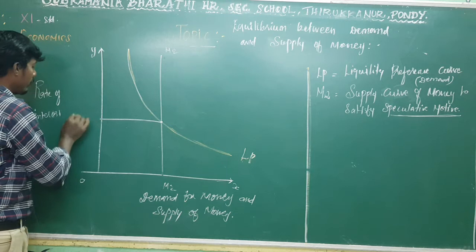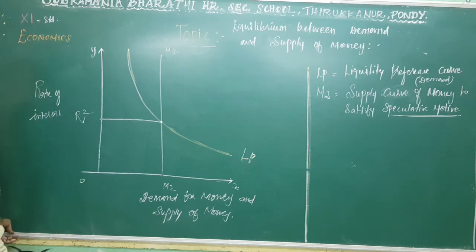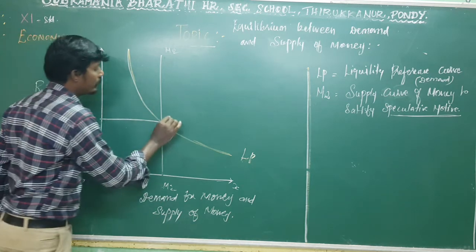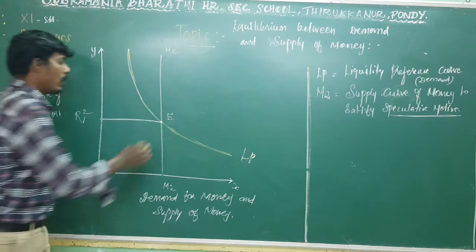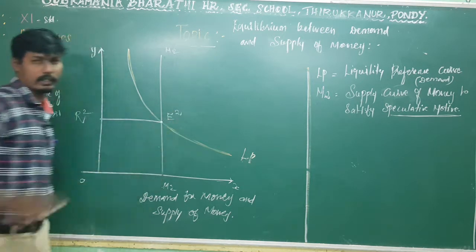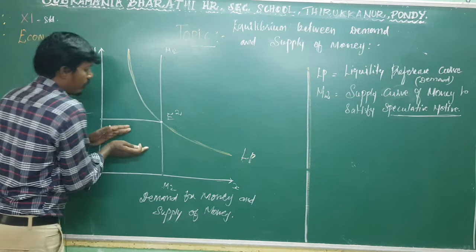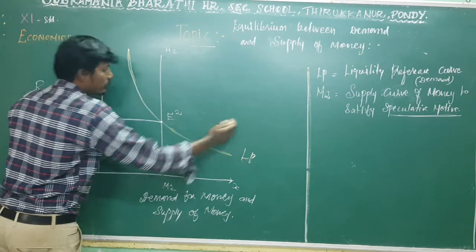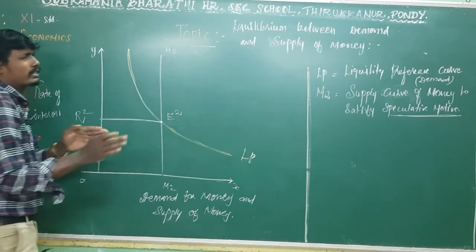You can see the demand curve. R2 is fixed upon the side, M2. This is R2, and the equilibrium point M is set up — that is E2. From the last video, the diagram shows liquidity preference 1 and liquidity preference 2, and this liquidity preference demand curve.